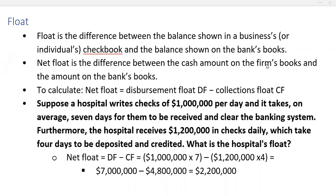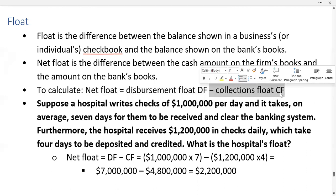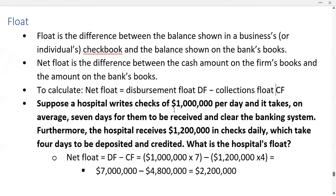To calculate, you have net float equals disbursement float, represented by DF, minus your collections float, represented by CF.